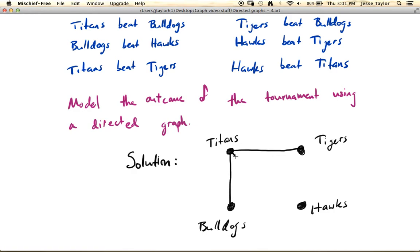The Titans are going to play everyone. So unsurprisingly, because every vertex should be connected to every other vertex, what we end up with here is the complete graph on four vertices, K4.